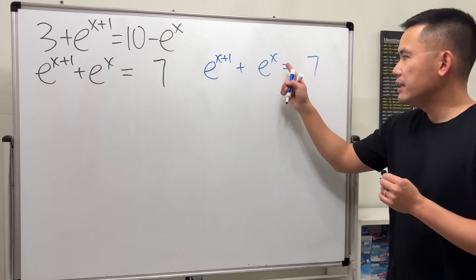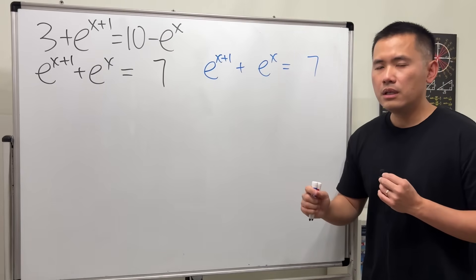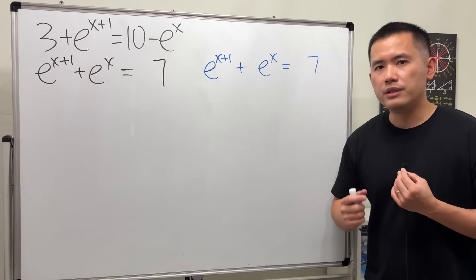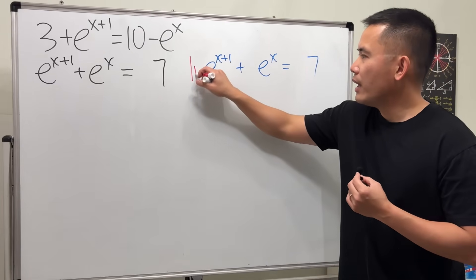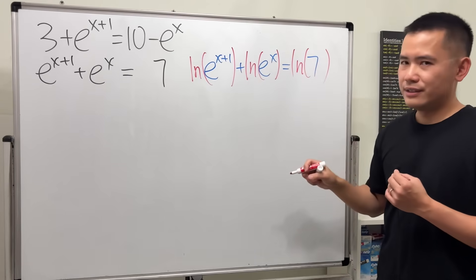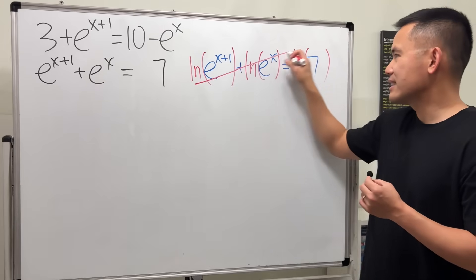Right here we have the x in the exponent of e, so to get rid of the e I want to take log base e, which is the ln. But if I do ln here, ln here, and ln here, this right here is not correct.